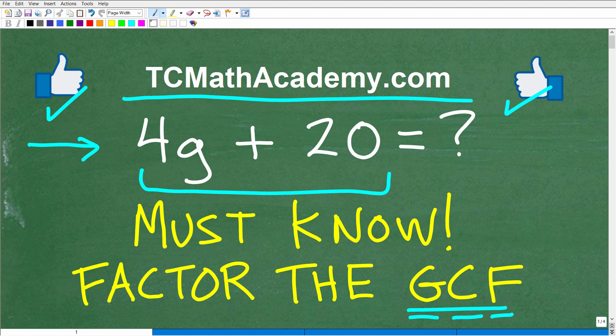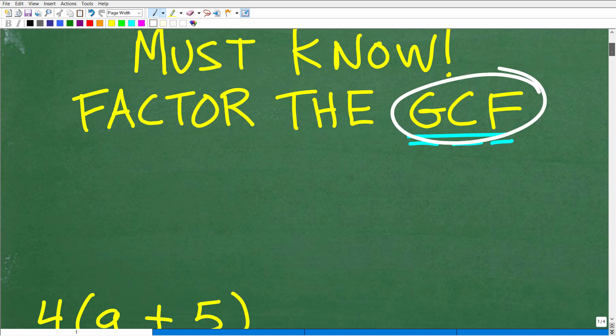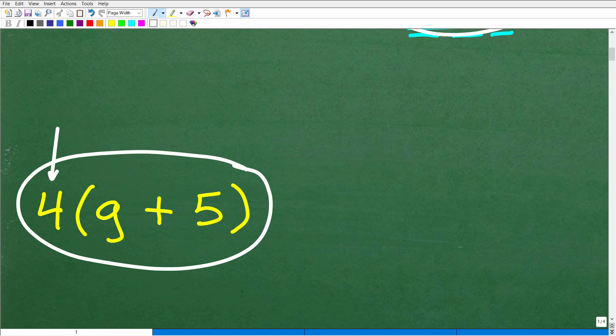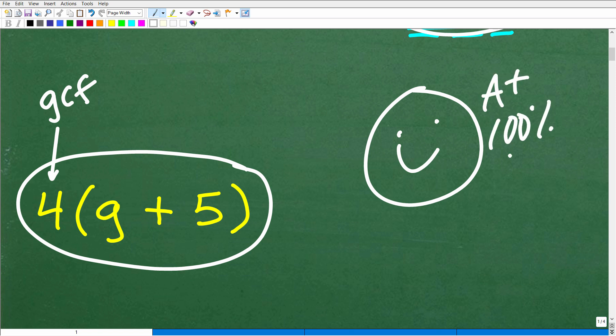Let's go take a look at the answer. 4g plus 20, we want to factor this expression. We want to factor out the GCF. What would the answer look like? It would look exactly like this: 4 times g plus 5. Specifically, the 4 is the greatest common factor. If you got this right, that is fantastic. I'm going to give you a happy face and A plus, a 100% and multiple stars. You are professionally certified when it comes to factoring, especially finding the GCF.